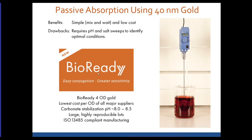There are a couple of challenges with passive absorption. First, every antibody needs some degree of optimization because you're reliant on lining up the pI of the antibody and the zeta potential of the gold surface, requiring pH adjustment and careful control of antibody concentration relative to gold. NanoComposix makes a particular variant of 40 nanometer gold that is pH-stabilized to between about 8 and 8.5, which is optimum for most antibodies, and we can generate large, very reproducible lots with ISO 13485-compliant manufacturing.